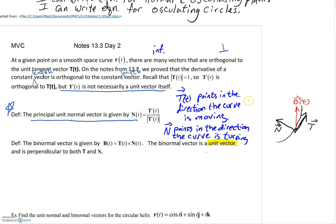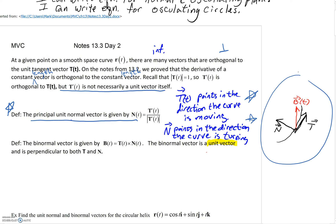Very importantly — two stars here — the unit tangent vector T points in the direction that the curve is moving. But this normal vector, also a unit vector of length 1, points in the direction that the curve is turning. If you have a curve, you can have your unit tangent vector indicating the direction the curve is moving, and the normal vector pointing in the direction the curve is turning.